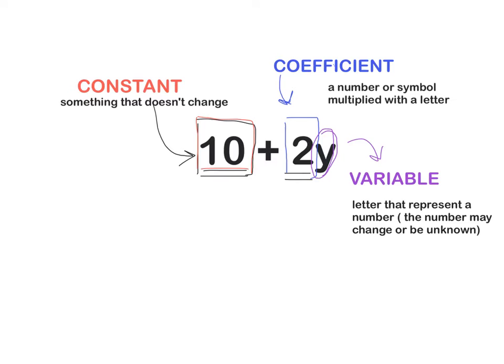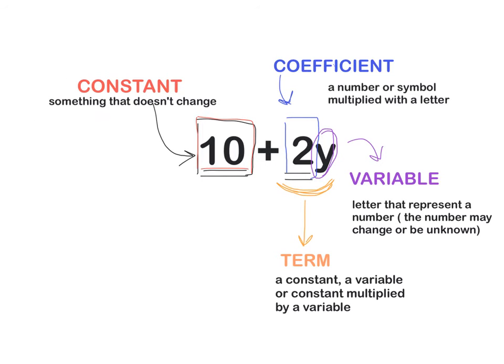The next keyword is term. A term is a constant, a variable, or a constant multiplied by a variable. This is the number multiplied by a letter, as we have here 2y. This is a term. And the last keyword for today is expression. What is an expression?